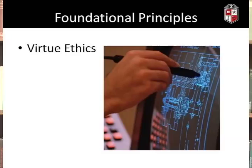Finally, the third idea that informs the engineering code of ethics is virtue ethics. On this approach, right and wrong is not simply about following certain actions or rules — it's about being the right kind of person. We should cultivate virtues such as honesty, compassion, courage, and temperance.